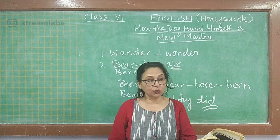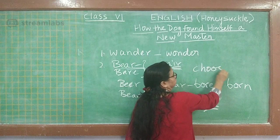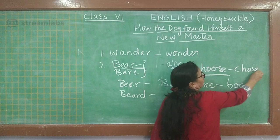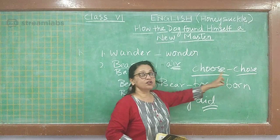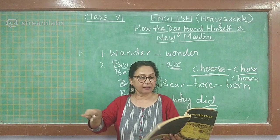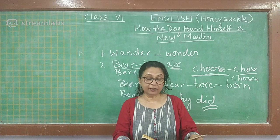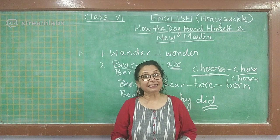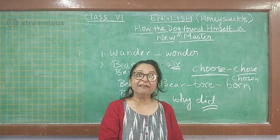Now let us note this word: 'choose, chose' — the past tense is 'chose,' and the third form is 'chosen.' He left the wolf because he found the bear was stronger than him. Note the difference: 'than' — T-H-A-N — is used for comparison, while 'then' — T-H-E-N — is for time. Many children and adults get confused between these two.